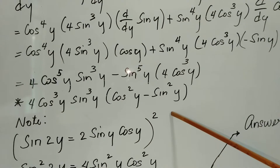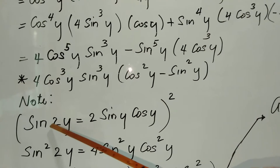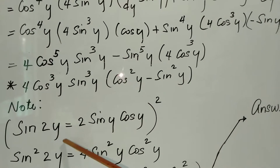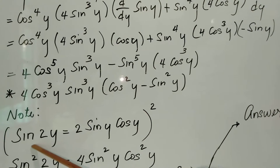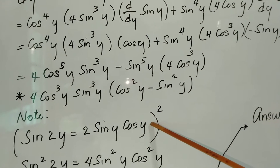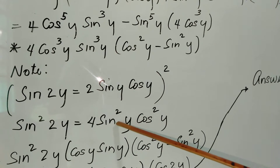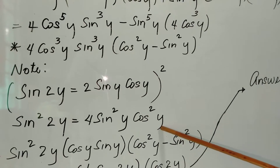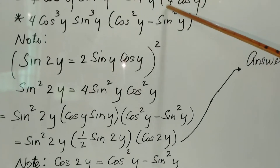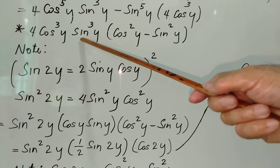Now I'll do a small review of our basic trigonometry identities. The double angle formula is sine of 2y equals two sine y cosine y. If we square this, we get sine squared 2y equals four sine squared y cosine squared y. We apply this identity to our expression: four cosine cubed y sine cubed y times the remaining factor.